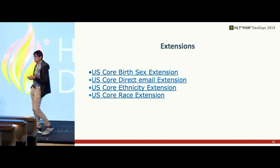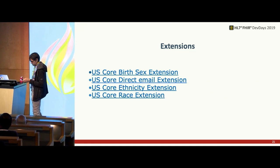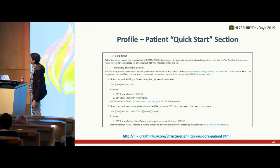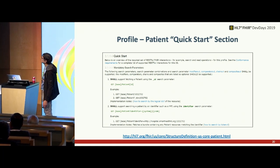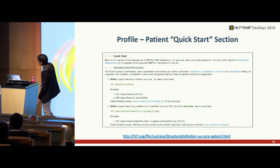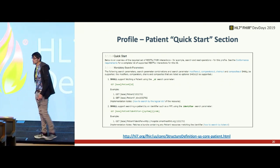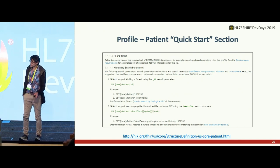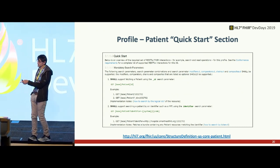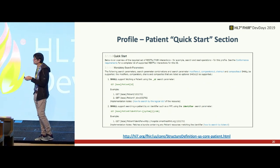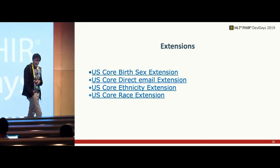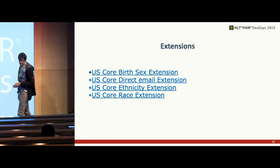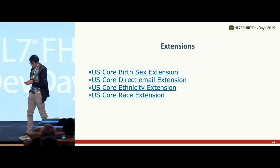We have four US-centric extensions in the US Core guides: a Direct Email extension, US Core Race, US Core Ethnicity, and a Birth Sex extension.